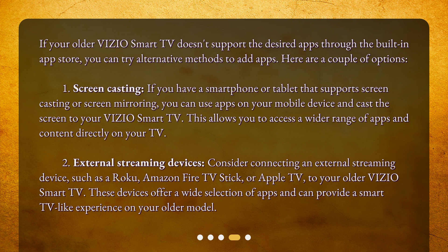Second, consider connecting an external streaming device, such as a Roku, Amazon Fire TV Stick, or Apple TV, to your older Vizio Smart TV. These devices offer a wide selection of apps and can provide a Smart TV-like experience on your older model.